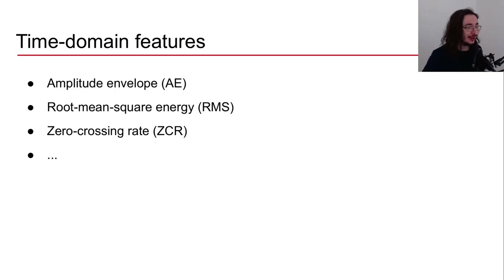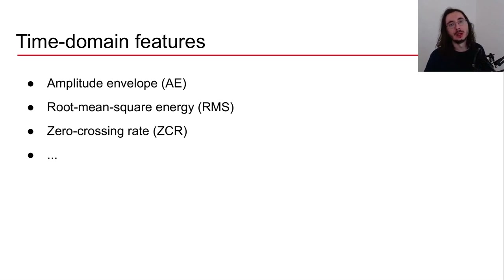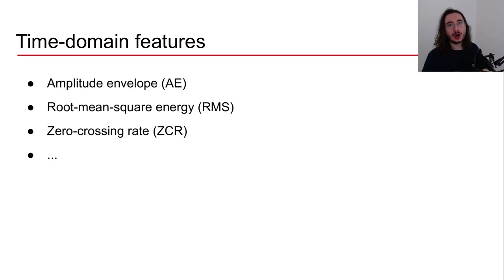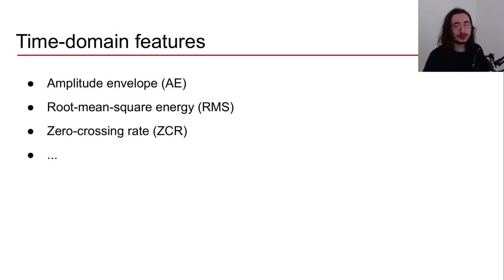Now, the three time domain features we'll be focusing on today are: amplitude envelope, root mean square energy, and zero crossing rate. All of these features are low-level acoustic features and they are instantaneous — in other words, we take these features at each frame in an audio signal.